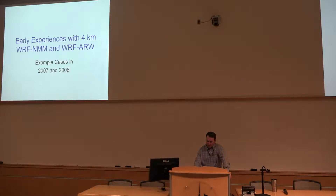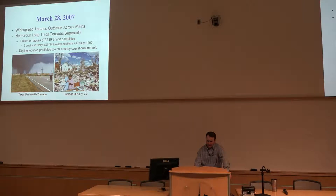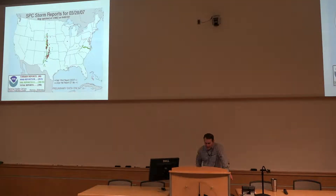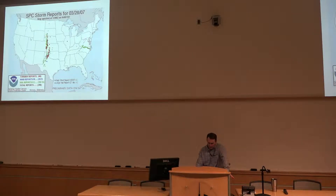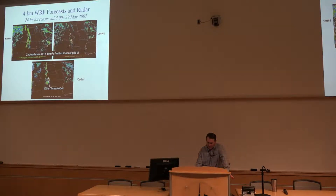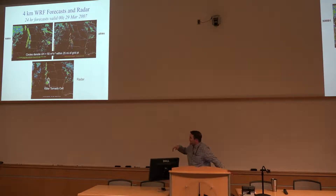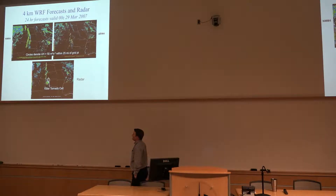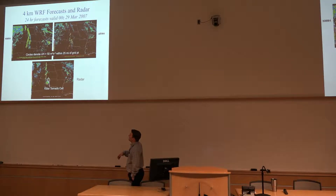So some of the early forecasts — March 20, 2007 — this is some of the early indications of the utility, a wide longitudinal tornado outbreak on that day. The circles there show how they used to indicate updraft helicity, highlighting within 25 miles of a point where UH exceeded a threshold.